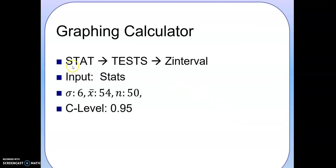If you have a graphing calculator, you press on stat, tests, and then go to Z interval. On the input, you're going to put stats, and all you have to do is put in those numbers: your standard deviation, your mean, your sample size, and what the C level is. It'll give you the same answer.